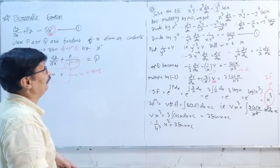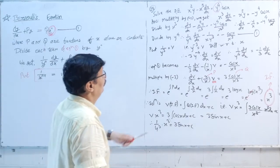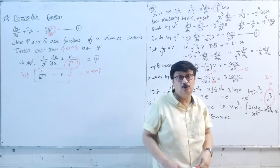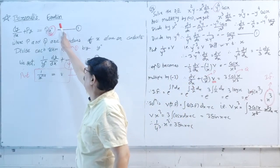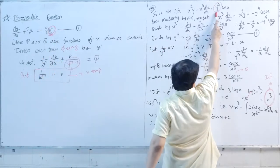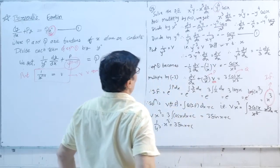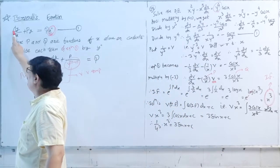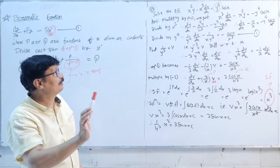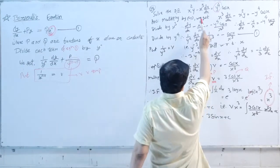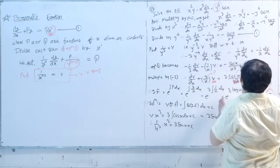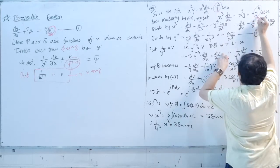Example 28: Solve x²y − x³·(dy/dx) = y⁴·cos(x). This is a classical case of a Bernoulli equation where yⁿ is y⁴, which I have circled. First, dy/dx should have a positive coefficient, but here dy/dx is negative, so multiply both sides by −1. This gives x³·(dy/dx) − x²y = −y⁴·cos(x).